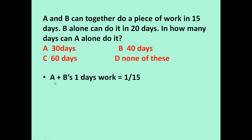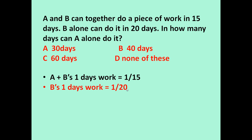To answer this question: A plus B's one day work is equal to 1 by 15, because A and B take 15 days to finish the work, so in one day they will finish 1 by 15 of the work. B takes 20 days, so B's one day work is equal to 1 by 20, because B can finish in 20 days, so in one day B will finish only 1 by 20 of the work.